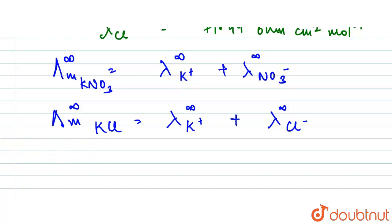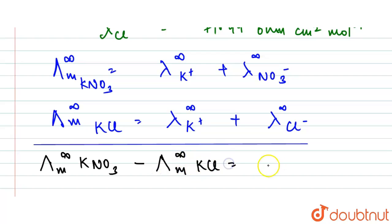So here now what we will do is we will subtract these both equations. Then after the subtraction what we will get is lambda KNO₃ minus lambda KCl is equal to, because K⁺ will be cancelled, here we will have NO₃⁻ minus Cl⁻.